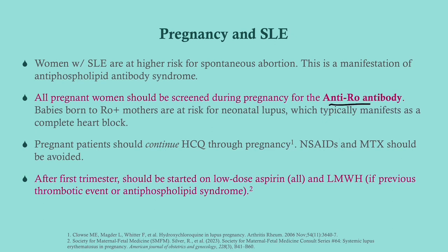With pregnancy and lupus, you should always test women at some point during pregnancy for the anti-Ro antibody — also called anti-SSA, usually tested for Sjögren's syndrome — because if it's positive, it confers a higher risk of the baby developing neonatal lupus. Pregnant patients should continue hydroxychloroquine through the pregnancy; however, NSAIDs and methotrexate must be avoided, especially methotrexate. After the first trimester, start low-dose aspirin to reduce the risk of preeclampsia, and low molecular weight heparin if they have a history of a thrombotic event or established antiphospholipid syndrome.